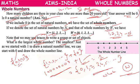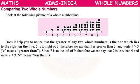For drawing a natural number line, we start from 1. But for drawing a whole number line, we take the beginning point as 0. In the same way, with equal gaps, we can represent 1, 2, 3, 4 and so on. This is called the whole number line.